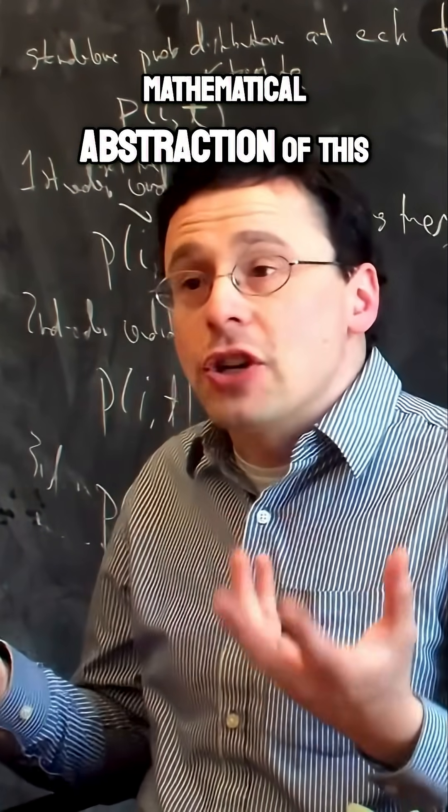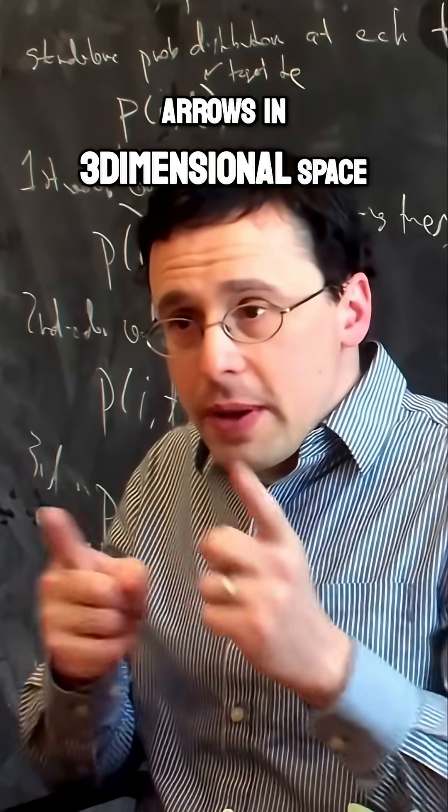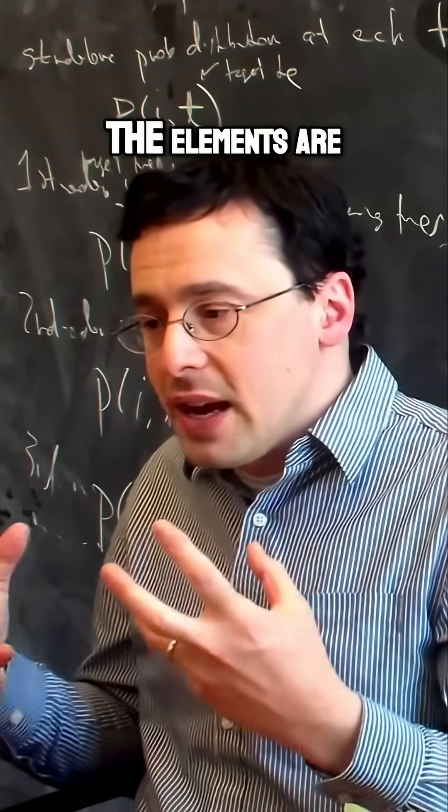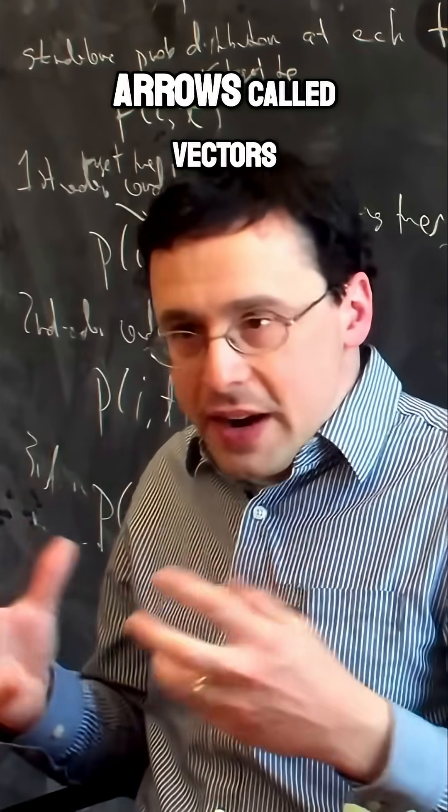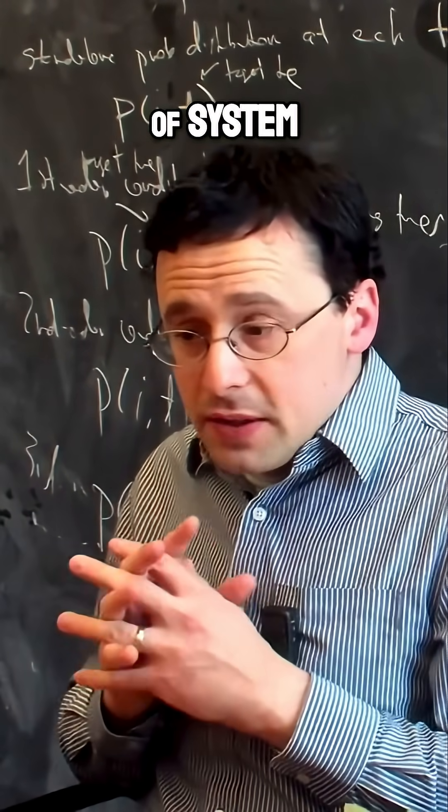A Hilbert space is a mathematical abstraction of this idea. Rather than the arrows in three-dimensional space, in a Hilbert space the elements are abstractions of arrows, called vectors, and the number of dimensions depends on the kind of system.